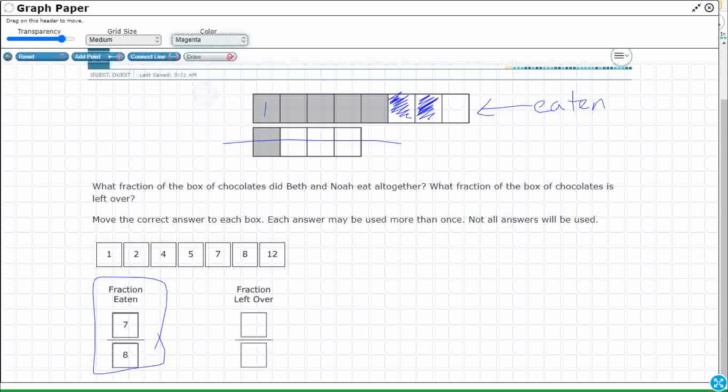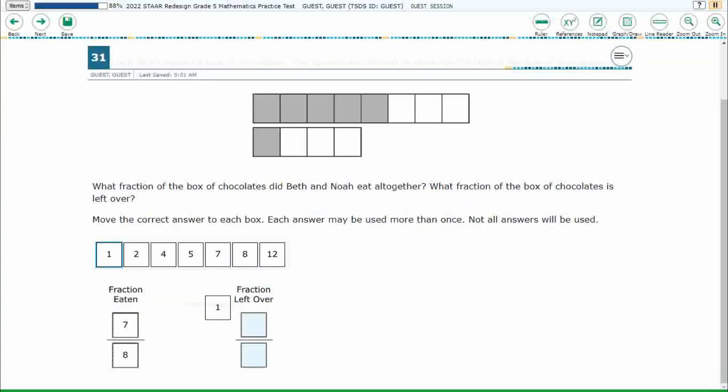Right. So if I wanted to draw over that, 1, 2, 3, 4, 5, 6, 7. There's my 7/8. Well, then what's left over? It's what I haven't eaten, which is going to be just that one right there. So that's just going to be my 1/8. So let's build that. That is our answer.